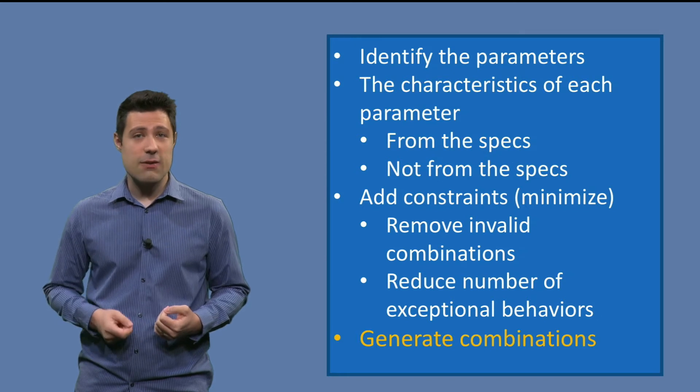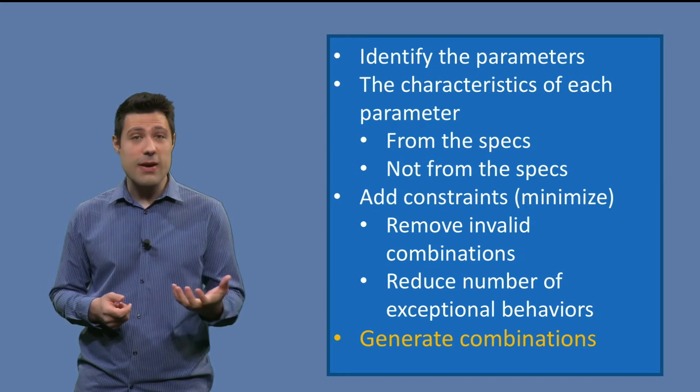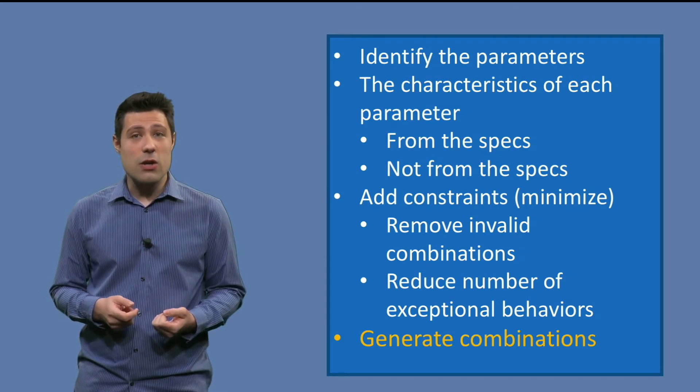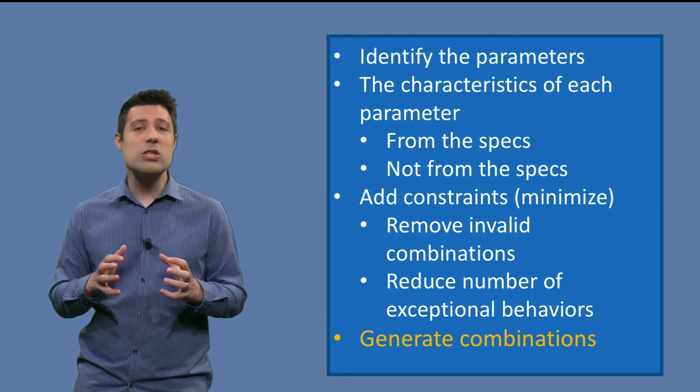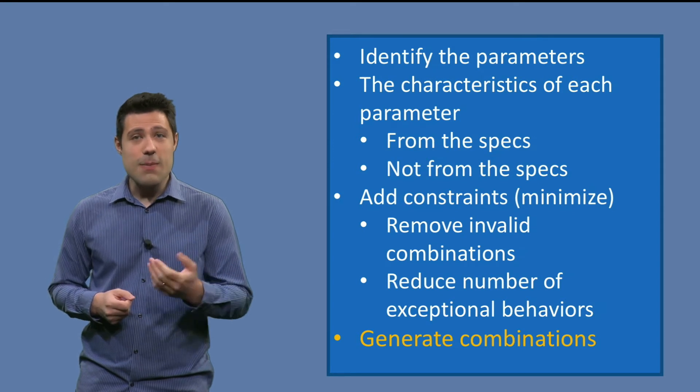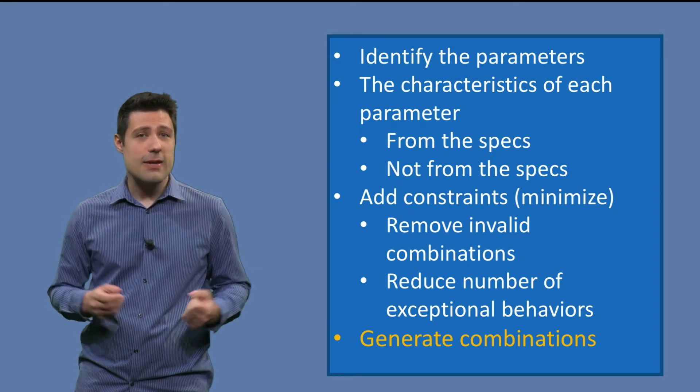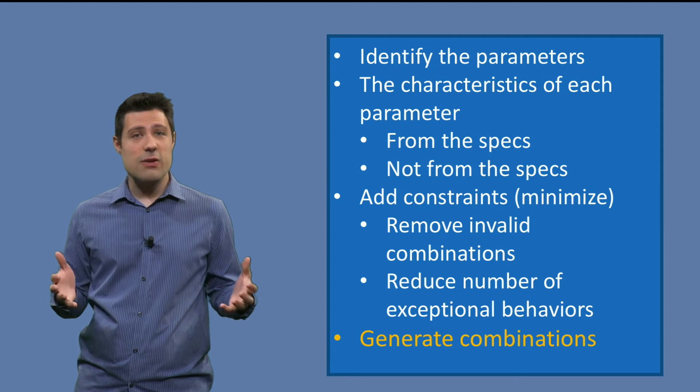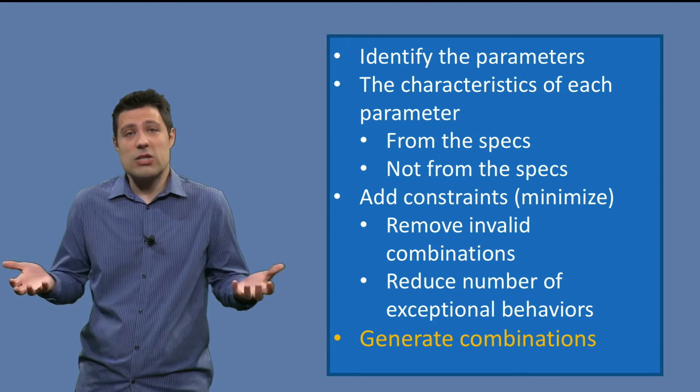As soon as we identify the characteristics of each of the identified parameters, we are then going to combine them all, like in a Cartesian product way. So all the possible combinations. But maybe this number is just too big, right? The more parameters and characteristics we have, the more combinations we have.